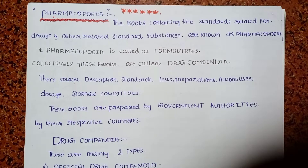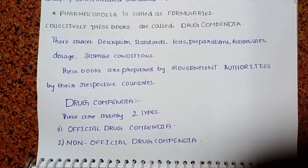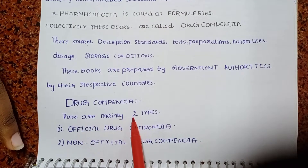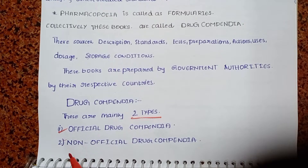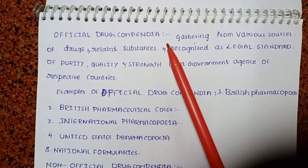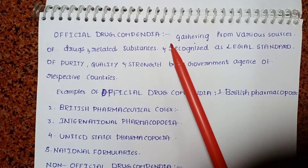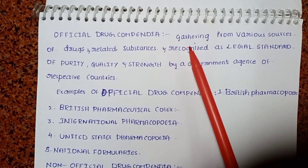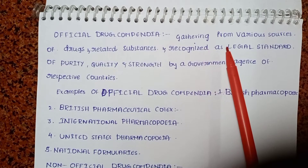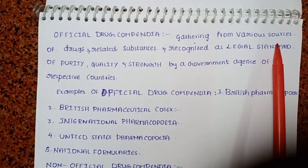Each pharmacopoeia is divided into two types — drug compendia is divided into two types. The first one is official drug compendia, which is a gathering from various sources of drugs and related substances.